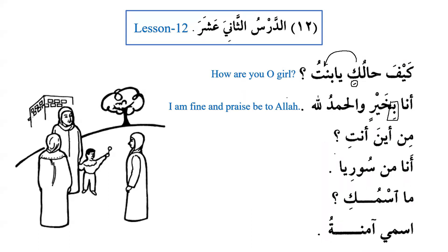Min aina anti — 'Where are you from?' Anti refers to the bint, and because bint is feminine, the pronoun used is also feminine. Ana min Suriya — 'I am from Syria.' Now, if a noun ends with alif or alif maqsura, we cannot put any case endings, even though it is majroor due to the harf al-jarr before it. Whenever a noun ends with alif maqsura, we don't put any endings.